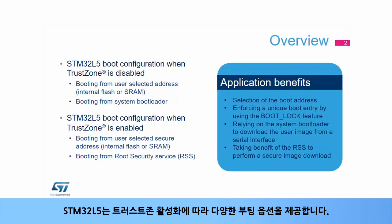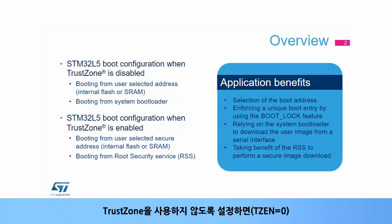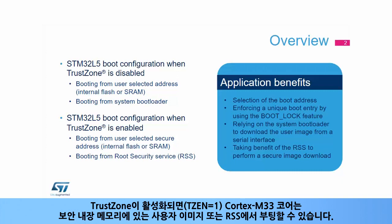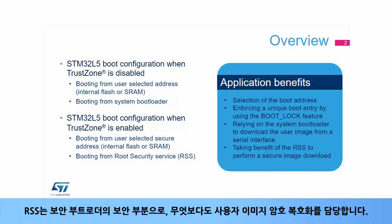The STM32L5 offers multiple boot options according to TrustZone activation. When TrustZone is disabled by setting TZEN to 0, the Cortex-M33 core can boot from either the user image present in the internal memory or the system bootloader, which downloads the user image from a serial interface. When TrustZone is enabled by setting TZEN to 1, the Cortex-M33 core can boot from either the user image present in secure internal memory or the RSS. RSS is the secure part of the secure bootloader, in charge of user image decryption, amongst other things.